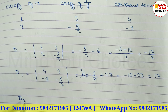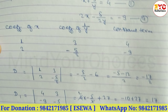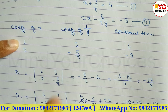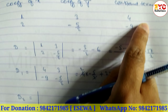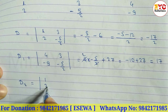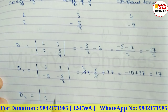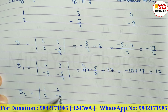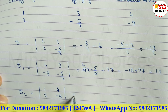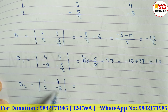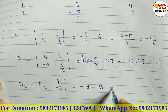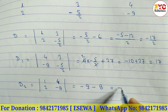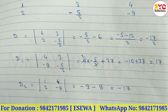Now find D2: use coefficients of x (1, 2) and constant numbers (4, −9). Multiply the main diagonal: 1 × (−9) = −9, then subtract 2 × 4 = 8. So D2 = −9 − 8 = −17.